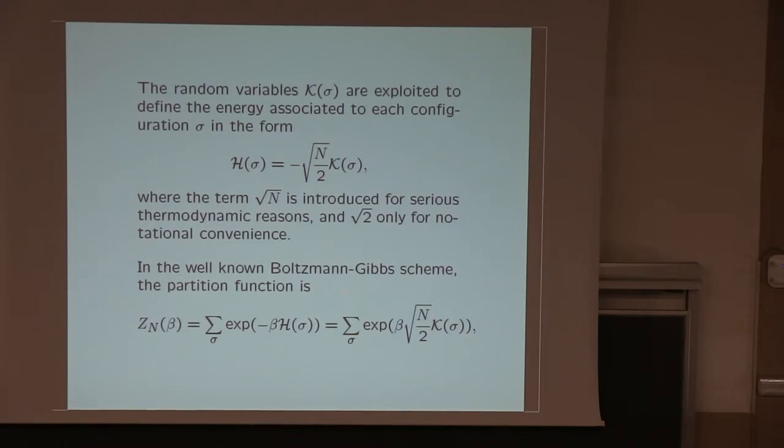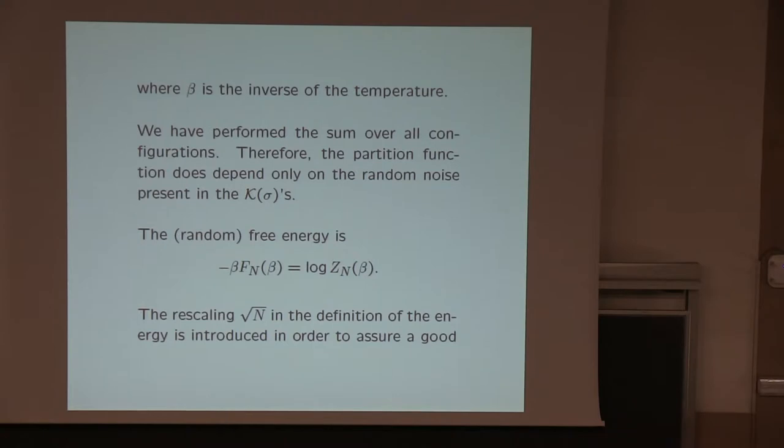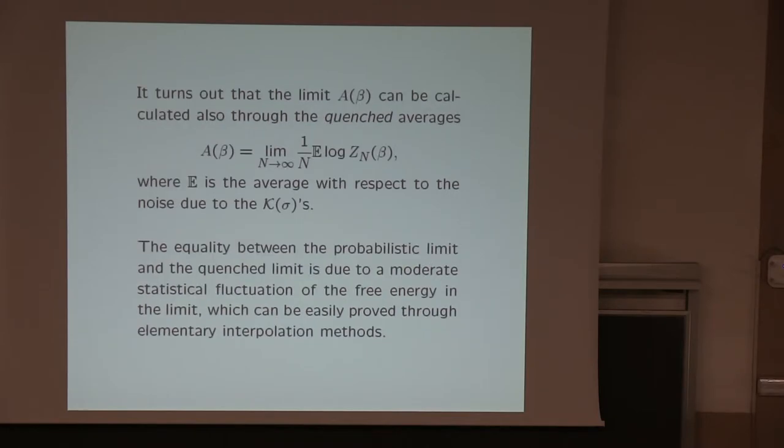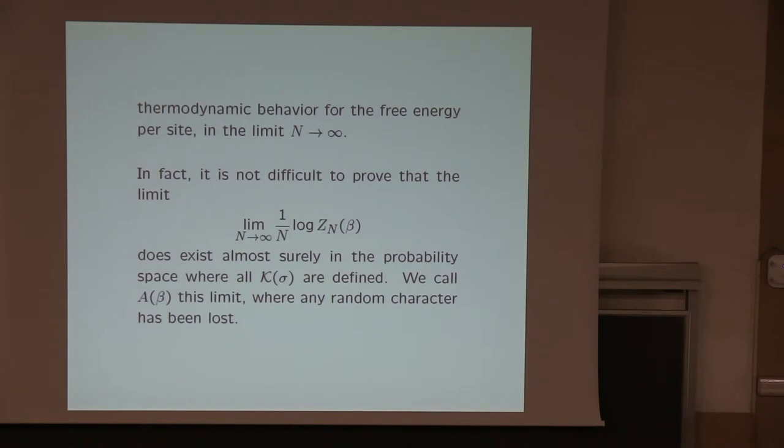I have been told by Giorgio Parisi that Nicola Cabibbo in the 70s introduced the same model, did not publish because it was considered too simple. In fact, it is very simple, but we will see that it is a very useful laboratory for understanding all things. Now, the random variables we put into Boltzmann-Gibbs scheme. This is the Boltzmann factor, we sum over zustandssum, partition function, and all thermodynamics comes from here. In particular, of course, the random free energy.